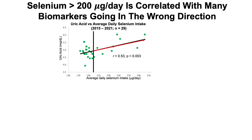For example, uric acid versus my average daily selenium intake: higher selenium intake correlates with higher uric acid levels, which is significant based on the p-value. Higher levels of uric acid increase during aging and are associated with an increased all-cause mortality risk via a U-shaped association. So selenium intake past 200 micrograms per day correlates with uric acid going in the wrong direction.